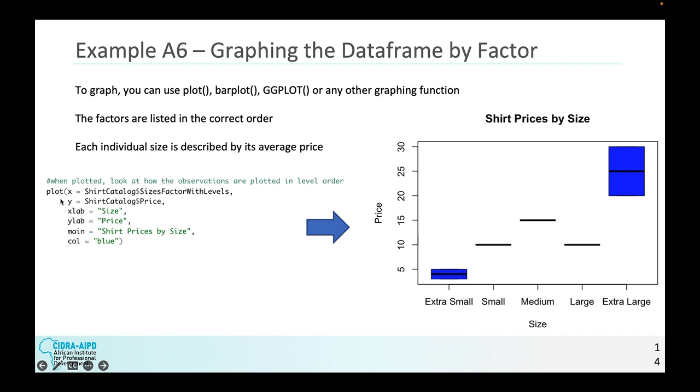So when plotted, look at how the observations are plotted in level order, extra small, small, medium, large, extra large. If we did not specify the level order, what would happen is that you would have extra large first and then extra small. And that doesn't really make any sense. So levels are really handy in helping keep things in order.